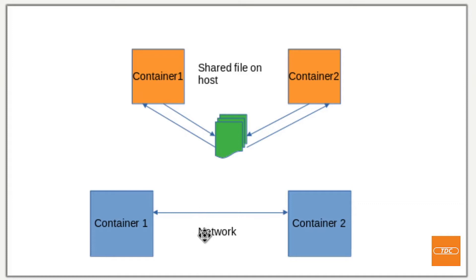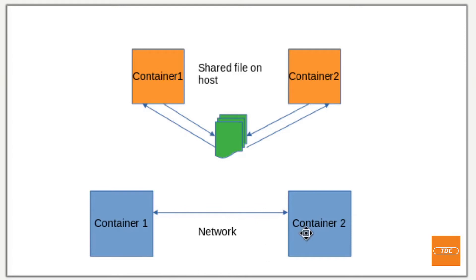The example I will be showing you is communication of Docker containers using the network, meaning we will be using the Docker network and there's no shared directory needed. We will just run one container and a second container, and we will be able to communicate from container two with container one and retrieve information.